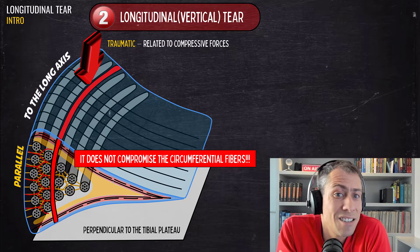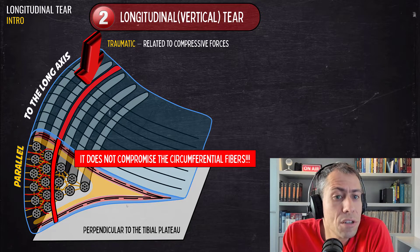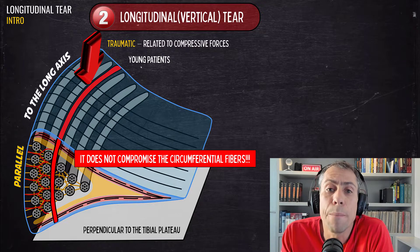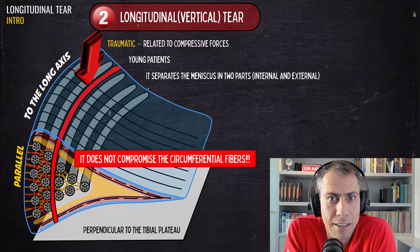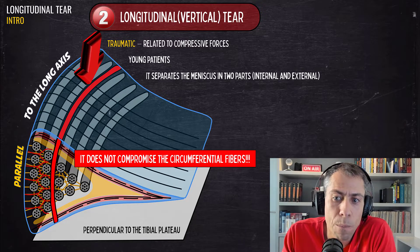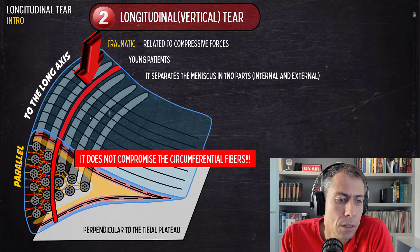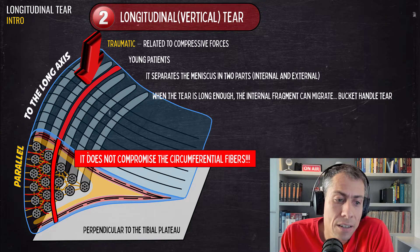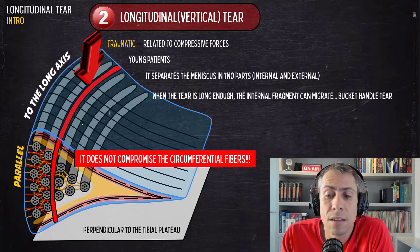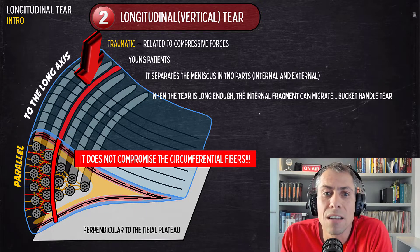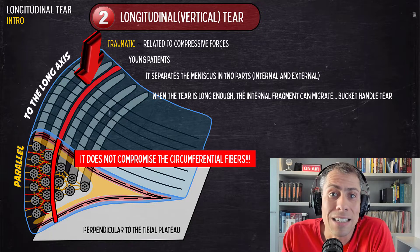Most of the time, the longitudinal vertical tear is a traumatic tear related to compressive forces. It's a tear of young patients and athletes, and it separates the meniscus into two parts: the internal part or inner portion, and the external part or outer portion. When the tear is long enough, the internal fragment can migrate, and when that happens, it can cause one of the most classic meniscal tears — the bucket handle tear.